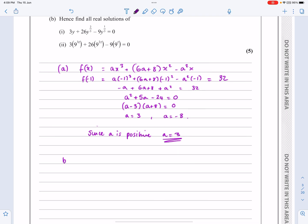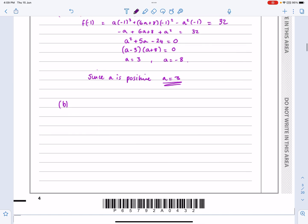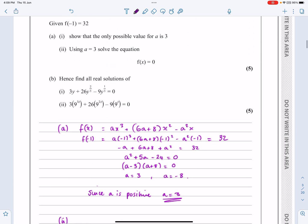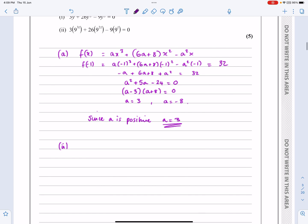Okay, so that's part a done. Let's have a look at a part 2. A part 2 says using a equals 3, solve the equation f(x) equals 0. So if a equals 3, then f(x) is going to be 3x³. If a equals 3, we're going to get 18 plus 8, that's 26x². And if a is equal to 3, we're going to get minus 3 squared, which is minus 9x. So they want us to solve that equals 0.